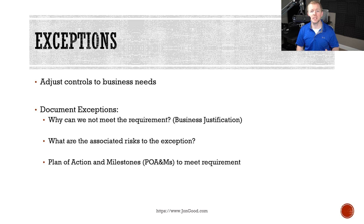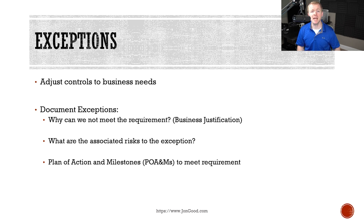With security, not everything we do is set in stone when it comes to controls. We need to adjust with the business and evaluate when exceptions are necessary. If you make an exception, you need to document things like the requirement that needs an exception, why the requirement can't be met, a business justification, risks associated with the exception, any supplemental controls being implemented, and a plan for mitigation — sometimes called plan of action milestones, or POAMs. Depending on the exception and severity of the risk, approval might need to come from a high-level person like the VP, CEO, or even the board of directors.